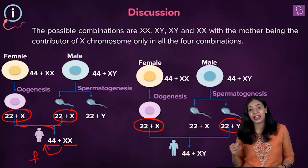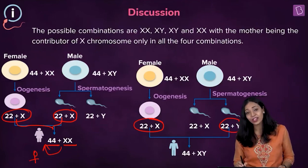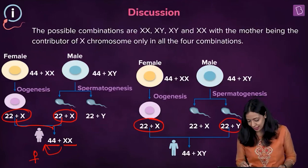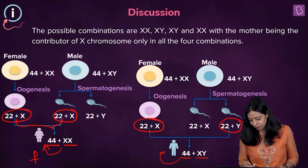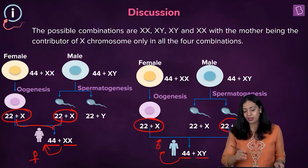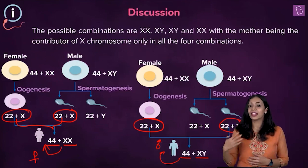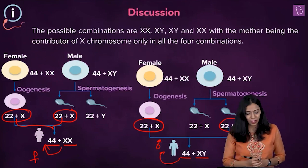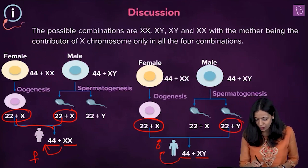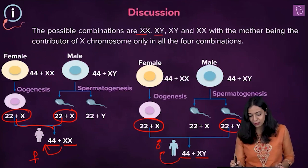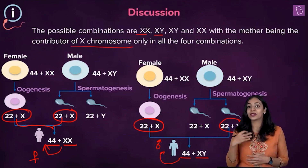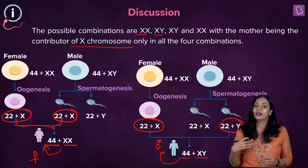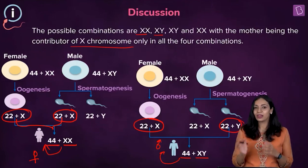In contrast, if the sperm carrying a Y chromosome fertilizes the egg, it results in 44 autosomes plus X and Y, and the baby will be male. Since males are heterogametic, it is the male parent that decides the gender of the baby. The mother always contributes the X chromosome, and it is the sperm — the paternal gamete — that determines whether the baby is male or female.